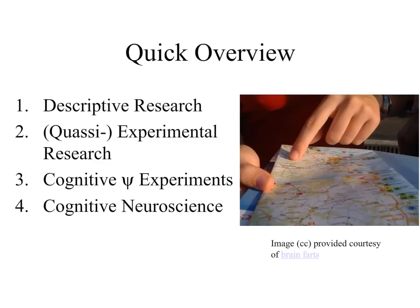Here's a quick overview or roadmap of where we're going in this section. We'll first explore some descriptive research methodologies, experimental and quasi-experimental research methods, cognitive psychology experiments, and we'll then begin to explore cognitive neuroscience.